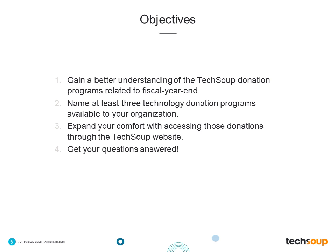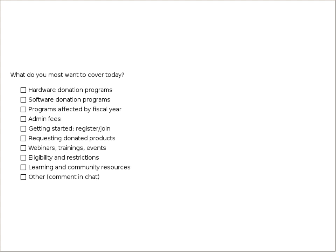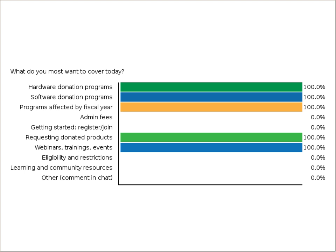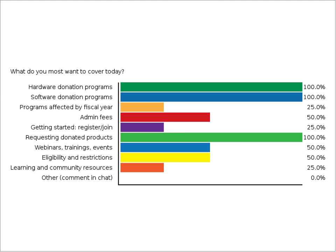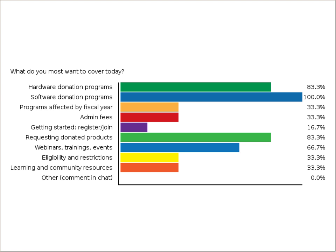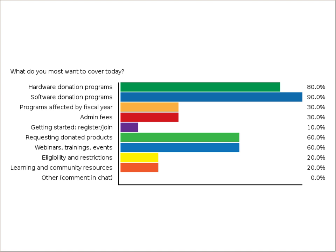But what I want now is to get your objectives, because this will help guide today's webinar. You have a variety of options on screen and can click as many as you'd like. Do you want to cover hardware donation programs — computers, mobile hotspots, laptops? Software donation programs? Specific donor partners like Microsoft, Symantec, QuickBooks, or Mobile Beacon? Which programs are affected by the fiscal year change on June 30th? Or are you brand new to TechSoup and need help registering your organization?